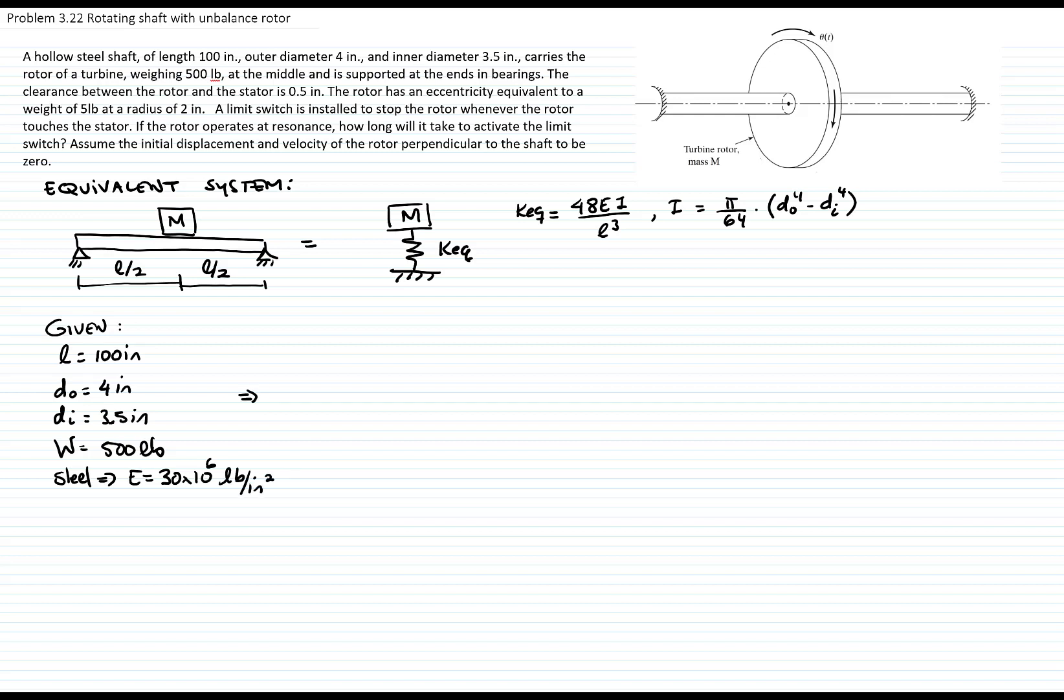Now let's calculate the area moment of inertia. I will plug in the numbers, which is 4 to the fourth minus 3.5 to the fourth pi over 64, and that gives me a value of 5.2 inches to the fourth.